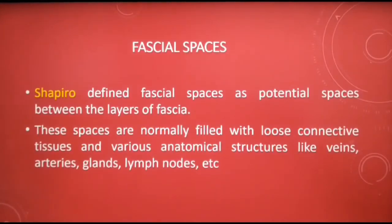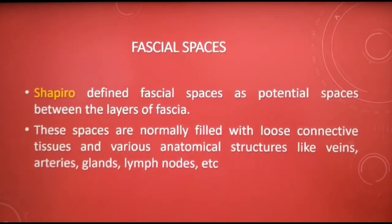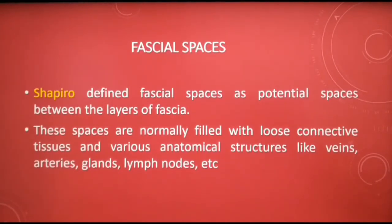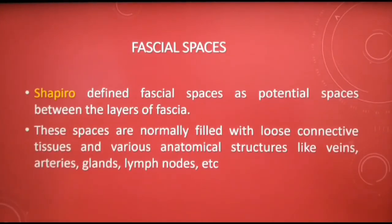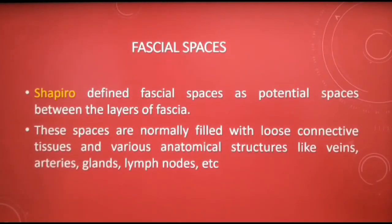In the previous lecture, we saw that fascia is a band or sheet of connective tissue, primarily made up of collagen, found beneath the skin that attaches, stabilizes, encloses and separates muscles and other internal organs. Facial spaces are potential spaces that exist between the fascia and underlying organs. They are separated from each other by barriers, which may be muscle, bone or fascia.